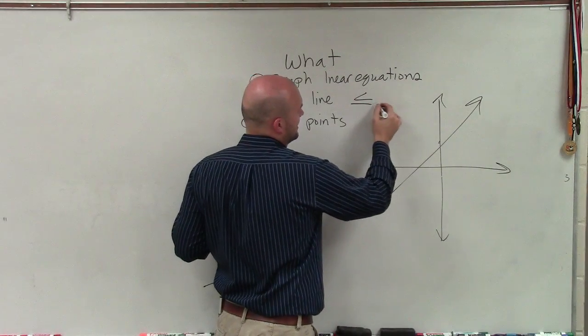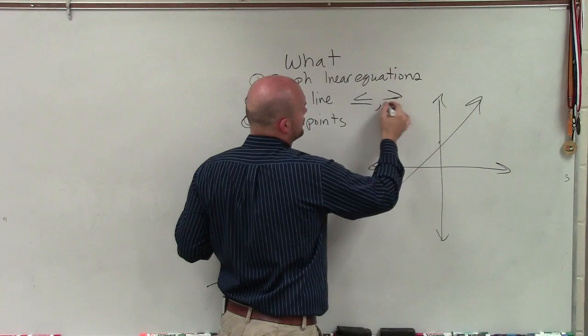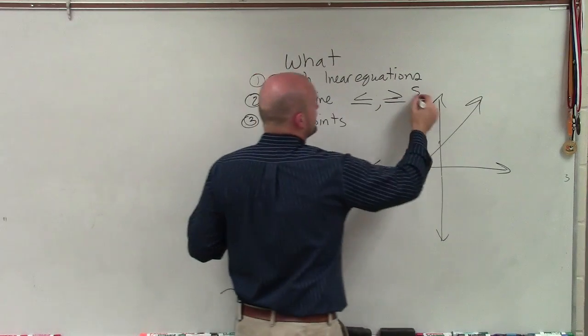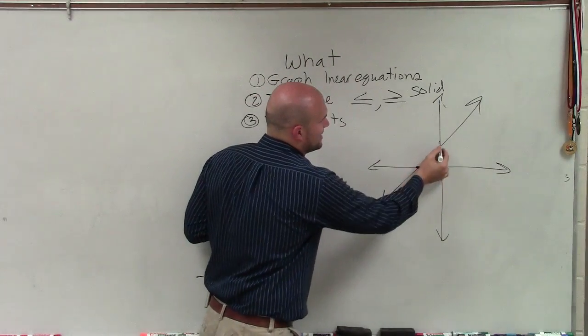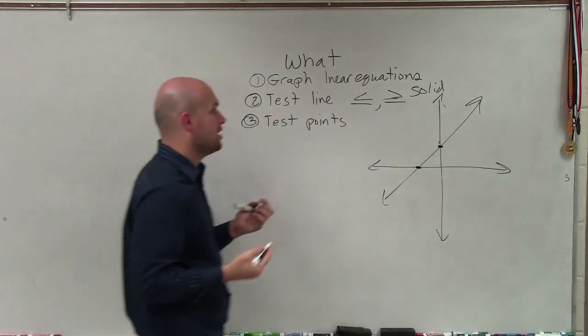when we have an inequality that is less than or equal to, or greater than or equal to, then we're going to have a solid line. That means all the points that lie on the line are going to make your equation true and will be a part of the solution.